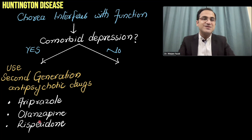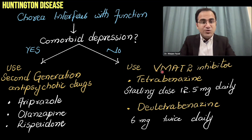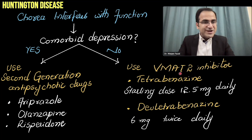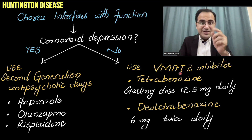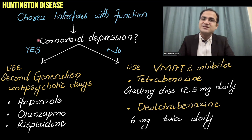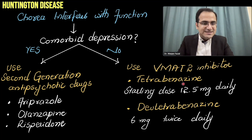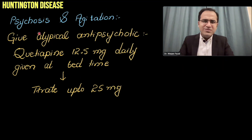In patients without depression, VMAT2 inhibitors — vesicular monoamine transporter 2 inhibitors such as tetrabenazine or deutetrabenazine — can be used. They reduce dopamine levels and control abnormal movements. However, VMAT2 inhibitors increase suicidal tendencies, so they must not be used in patients with depression.